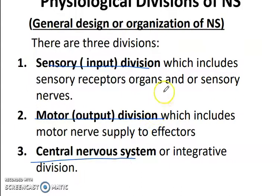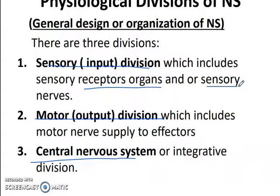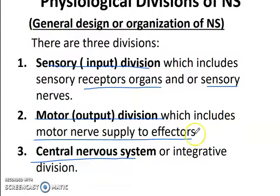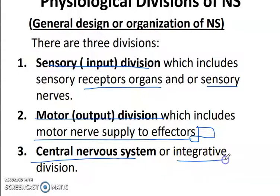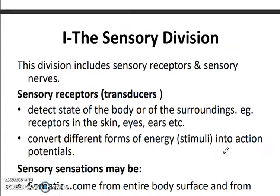The physiological divisions are: the sensory input division, the motor output division, and the central nervous system or integrative division. The sensory input division includes sensory receptors, organs, or sensory nerves which conduct nerve impulses. The motor output division includes the motor nerve supply to the effectors, providing direction to the muscles.